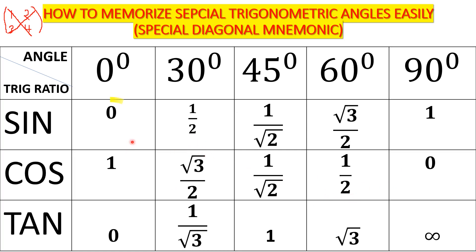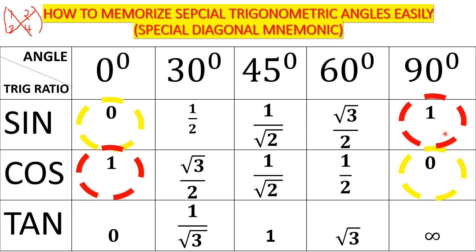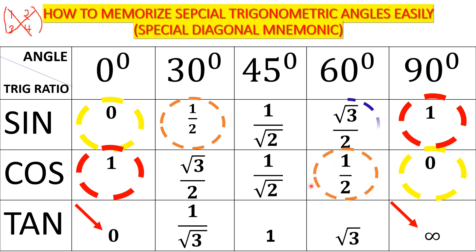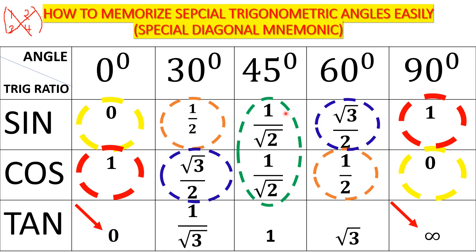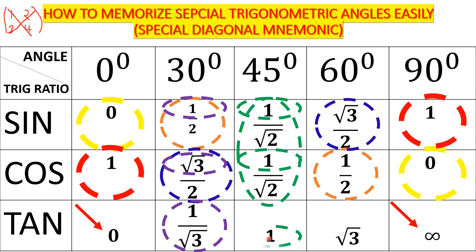The first thing to note is that at this point we have 0, and at this point we also have 0. At this point we have 1, and at this point we also have 1. To obtain the tangent of 0, we take 0 divided by 1, which gives 0. To obtain the tangent of 90, we take 1 divided by 0, which gives infinity. For tangent 30, we take 1 over 2 divided by root 3 over 2, giving 1 over root 3. For tangent 45, we take 1 over root 2 divided by 1 over root 2, giving 1. And for tangent 60, we take root 3 over 2 divided by 1 over 2, giving root 3. That is the spatial diagonal mnemonic.